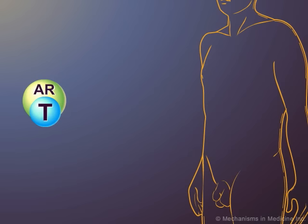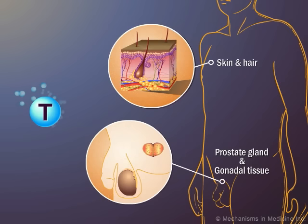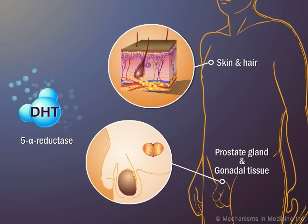In skin, hair, the prostate gland, and gonadal tissue, testosterone must be converted to dihydrotestosterone, or DHT, by 5-alpha reductase, in order to bind the androgen receptor.